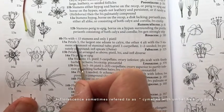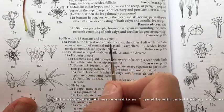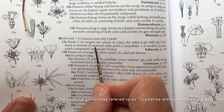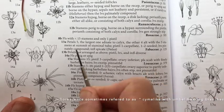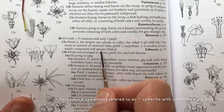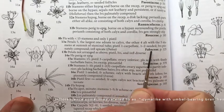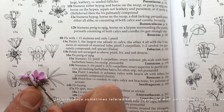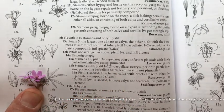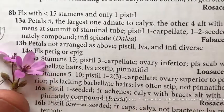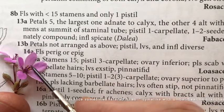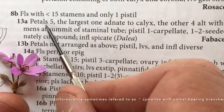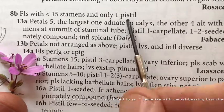13A looks good at first - petals 5 - but this is why we need to read the whole couplet. The largest one adnate to the calyx, the other four alternate with the five stamens at summit of staminal tube, pistil 1-carpellate, 1-2 seeded, leaves pinnately compound, inflorescence spicate. This is taking us to the pea family, Fabaceae. When we look at our flower, our largest petal would have had to be adnate to the calyx - and we don't have a largest one. All our petals are similar, so that won't work.